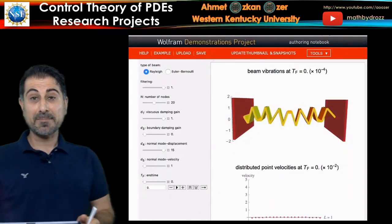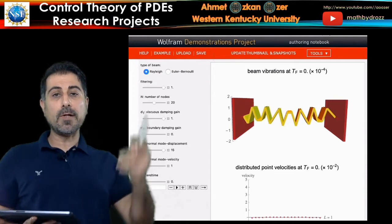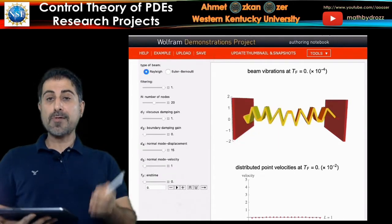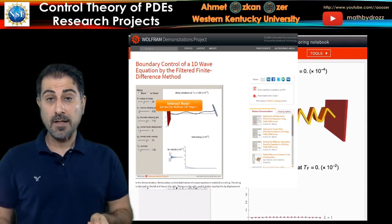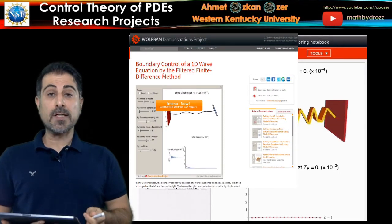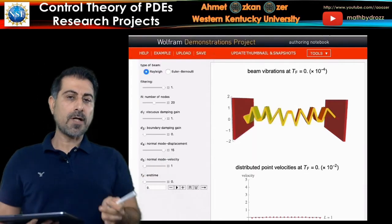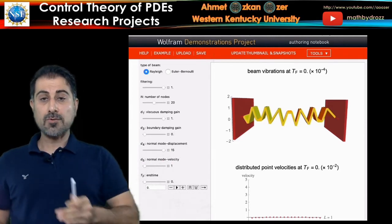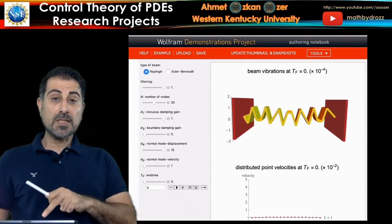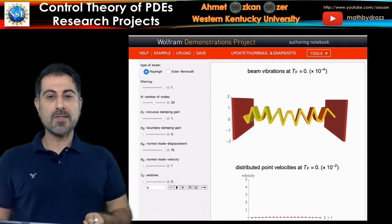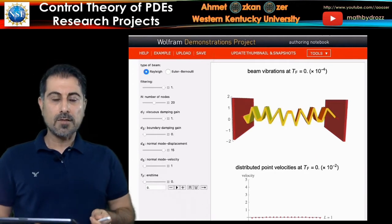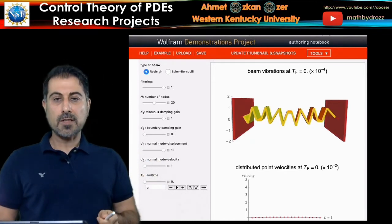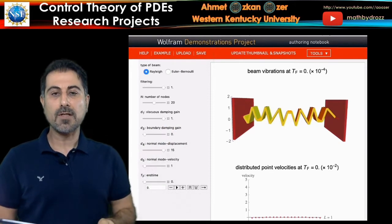Here is the Wolfram demonstration project, already available at Wolfram's website — specifically for the Rayleigh beam and Euler-Bernoulli beam. There is also another one for the wave equation with boundary damping using the filtering technique. This demonstration project is about designing a feedback controller using observation. We added a viscous damping-type filtering to the equation to suppress vibration, and there is also a demonstration with direct filtering.